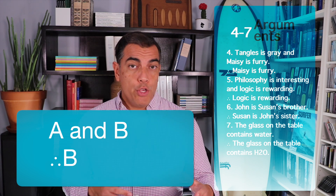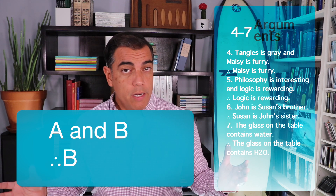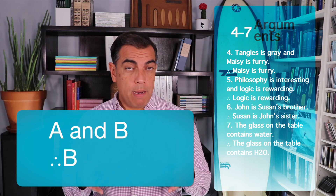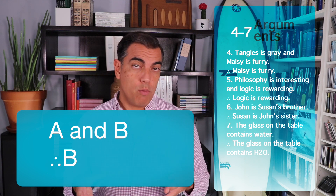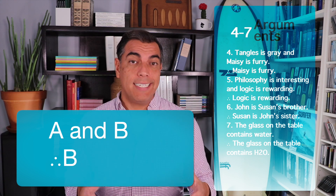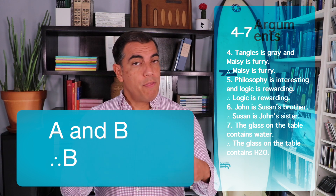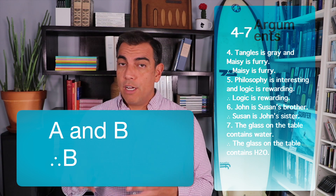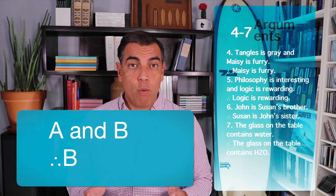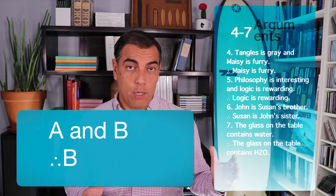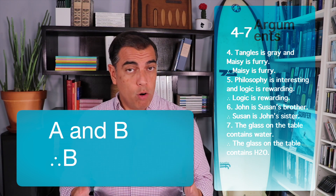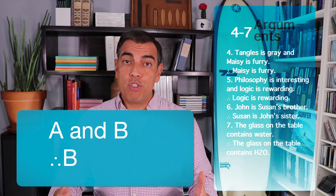Notice you could substitute whatever you wanted in for A and B. As long as that first premise is true, the conclusion is going to be true. So four and five are structured in such a way that they are NTP — if their premises are true, the conclusion has to be true based solely on the structure. Therefore, any argument with that structure will also be NTP.